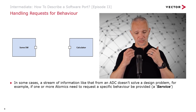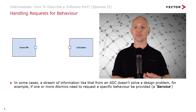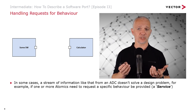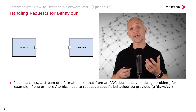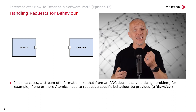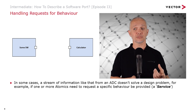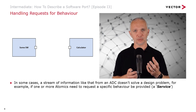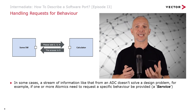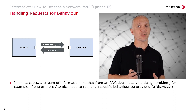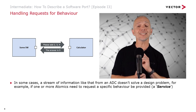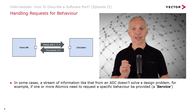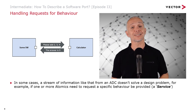That's not everything we want to do in software, because sometimes a stream of information like we get from an ADC doesn't fit the problem we're trying to solve. For example, if we have one or more atomics that need to request a specific behavior provided by another piece of software — we have a service and a request for behavior maps to that service. For instance, software might ask a calculator function to add two, three, and four, and the calculator will crunch some numbers and come back with the answer nine.